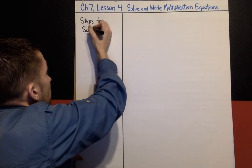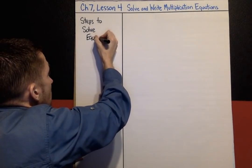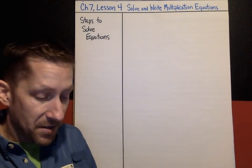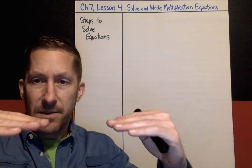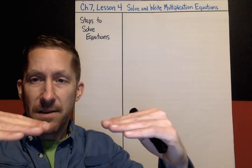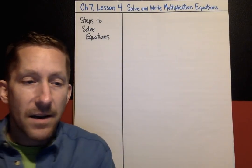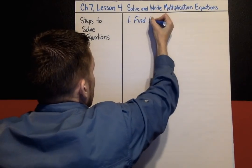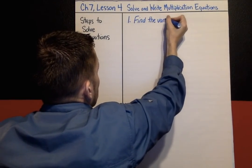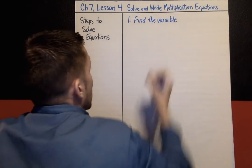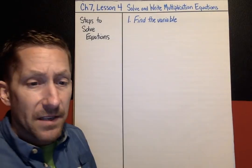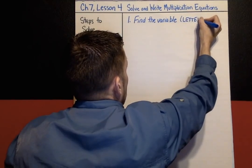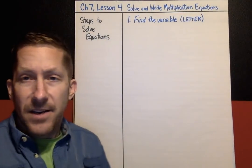Steps to solve equations. Remember that an equation is like a scale that's balanced — you have something equal to something else, and both sides are balanced. Step one: you look at your equation and you find the variable. How do you find the variable? Super easy — you look for the letter. That's it. You find the letter in your equation.